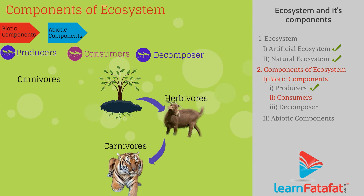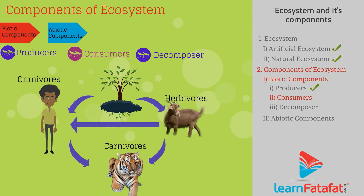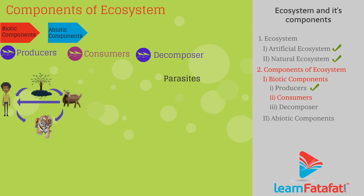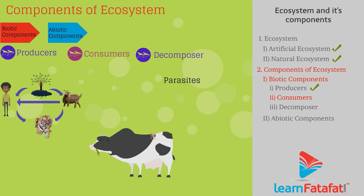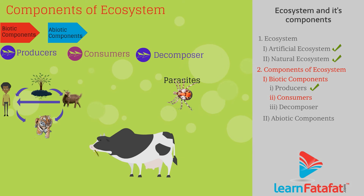Consumers can be classified as omnivores and parasites. Omnivores are organisms that can obtain food from plants as well as animals — for example, humans. Parasites are organisms that live in or on other organisms and obtain food from them — for example, ticks.